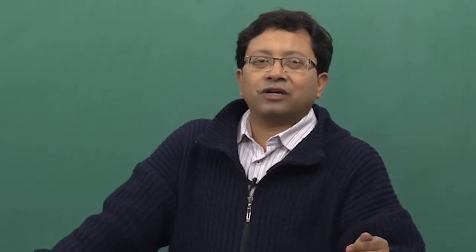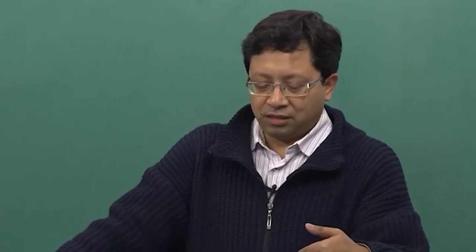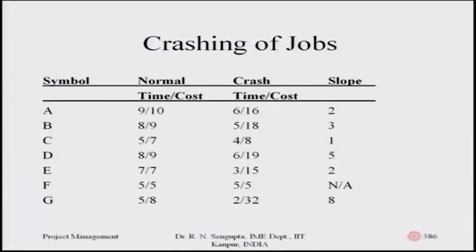As a further continuation of that concept, we will also consider how costs are factored in. This slide presents data related to normal time and cost — shown in the second column — for jobs A through G. The crash time, meaning reduced durations with their extra costs, is in the third column, and correspondingly the slopes are given.